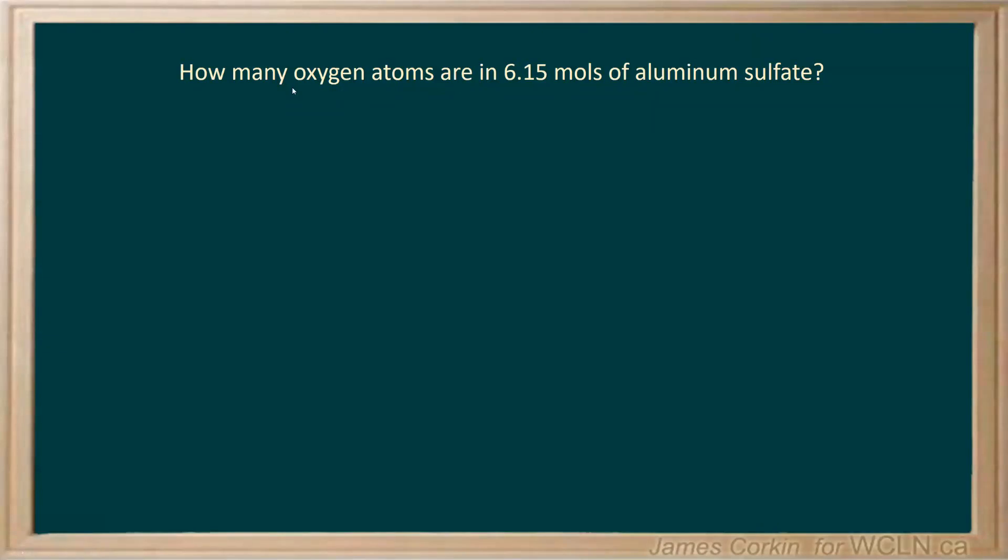Sometimes you may be asked questions that refer to a specific element inside a compound. Let's go over an example of how to do that sort of calculation. We're asked how many oxygen atoms are in 6.15 moles of aluminum sulfate. Oxygen atoms is what we're trying to find, and moles of aluminum sulfate is what we know.